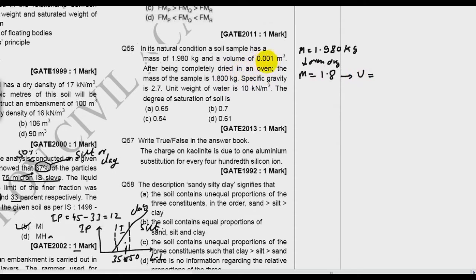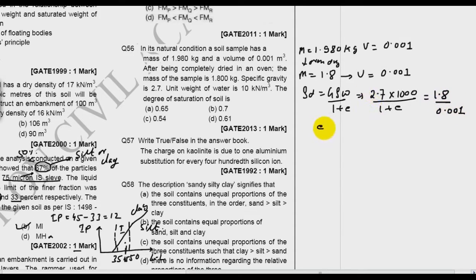Mass is given as 1980 kg, after oven dry the mass becomes 1.8 kg and volume is constant. Dry density is g·ρw over (1 + e), and g is 2.7, ρw is 1000, so (1 + e) equals dry mass which is 1.8 divided by volume 0.001. If you solve you will get e equals 0.5.